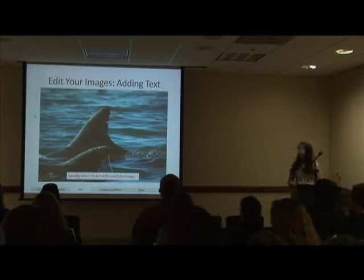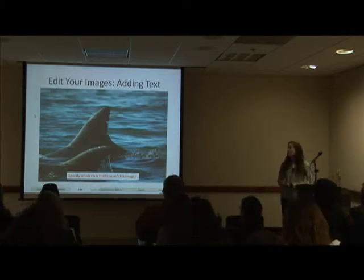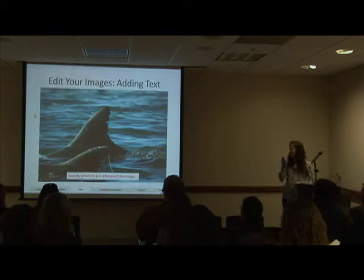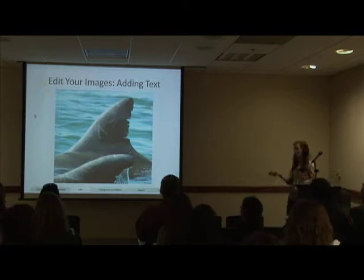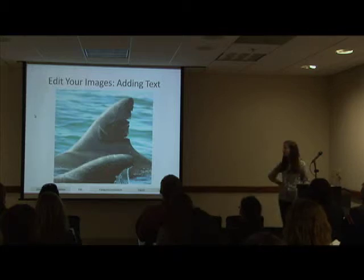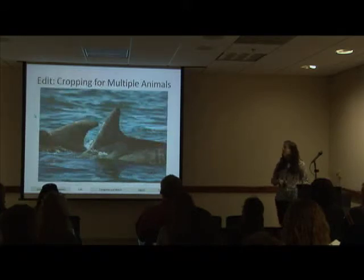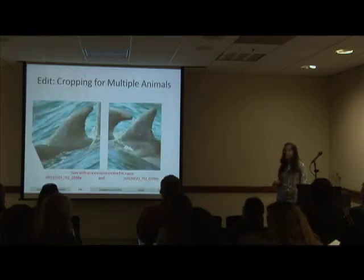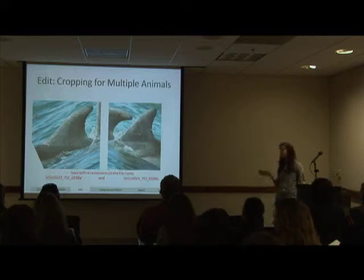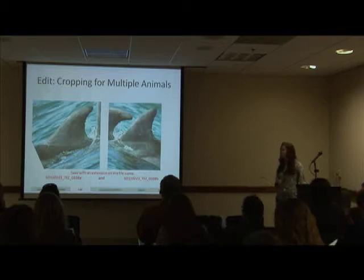Sometimes you might have images where you're focusing on an animal in the background but something in the foreground is blocking it. I'll add a little text — like an X — just to show that this is not the animal we're concentrating on; it's the one in the background. If you have an image with two animals in it, I edit, crop, rotate, and adjust the exposure for each individual, saving each with the original file name plus a little extension like A or B to denote the differences, while retaining the original image number.